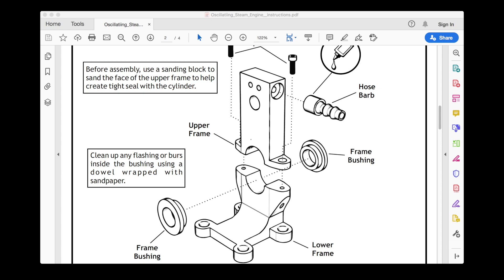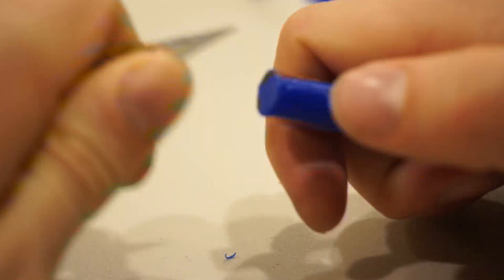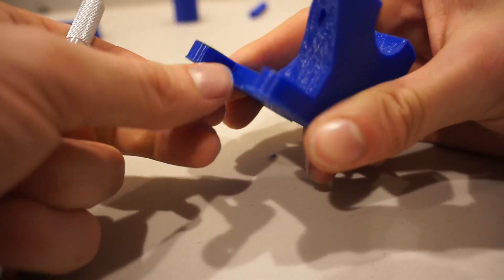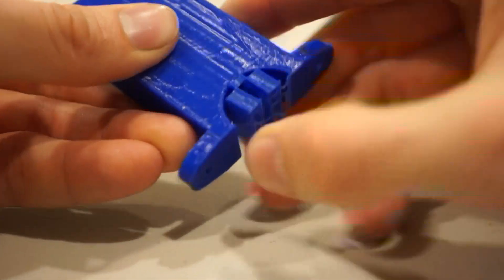It looks like here we will create the frame, add bushings, and a hose barb. But before we do that, it looks like we're supposed to clean up the pieces a bit. So here we'll trim some flashing, remove support material, and perform what amounts to an exorcism on this poor, poor cylinder.